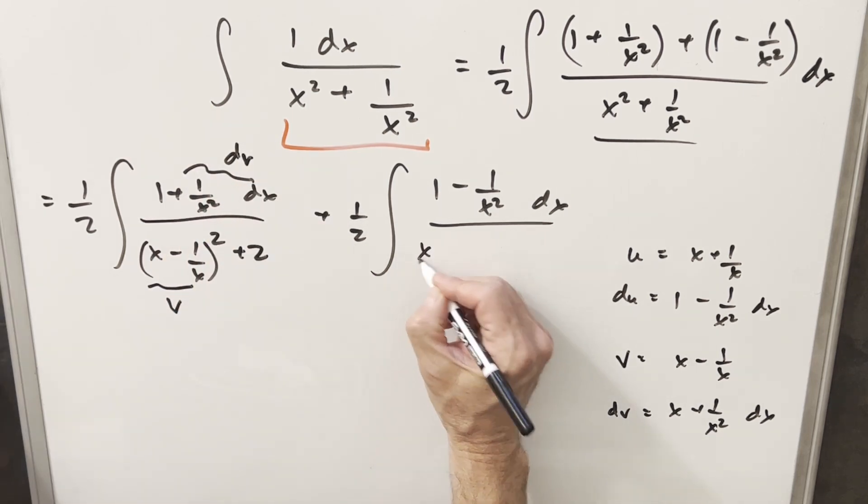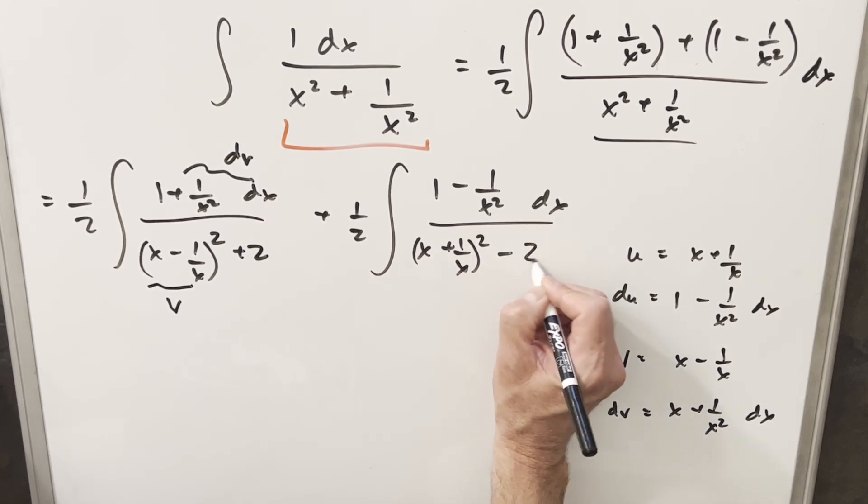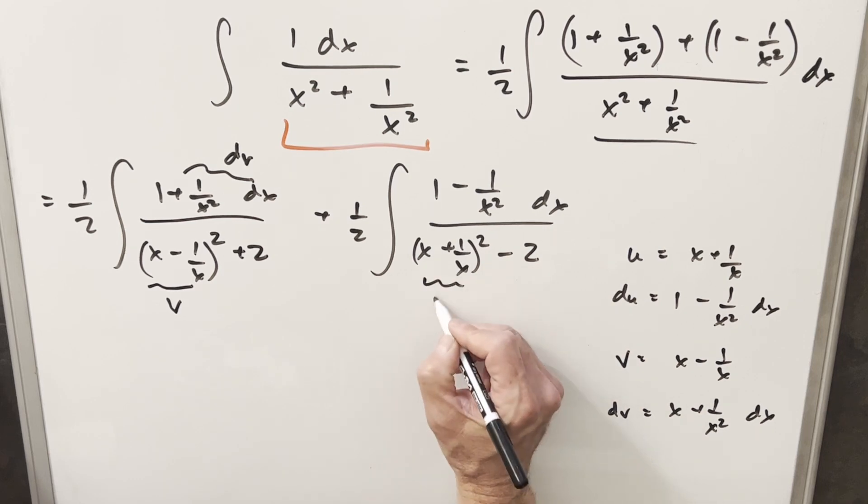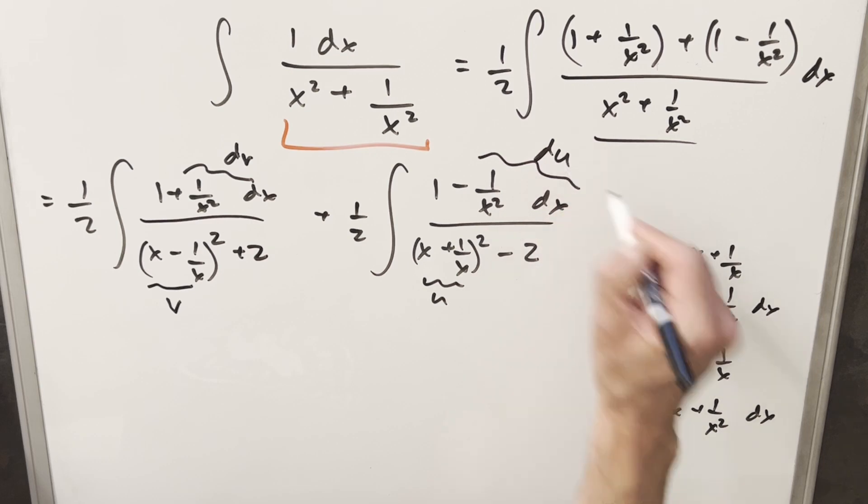And then just doing it with a different sign over here, this one's going to be x plus 1 over x squared and then we have to subtract 2. And again, this is going to be our u that we already did. And then our numerator is going to be our du right there.